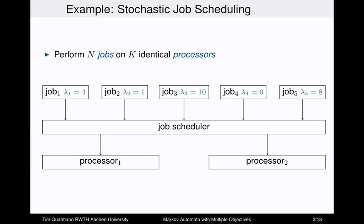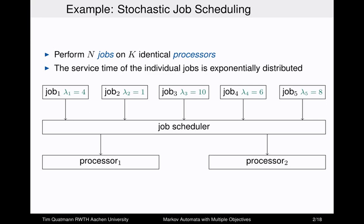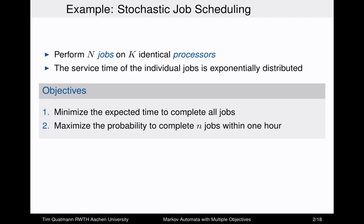Consider a stochastic job scheduling problem where we are given n jobs on one side and k identical processors on the other side, and our task is to schedule these jobs on the processors. The stochastic part is that we assume the service times of the individual jobs are exponentially distributed with some rate lambda. Jobs with a low rate statistically probably require a longer time than jobs with a higher rate.